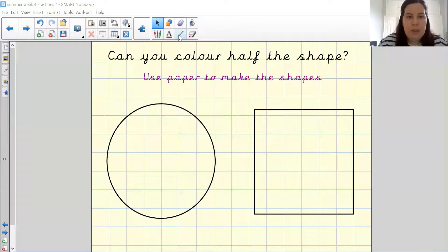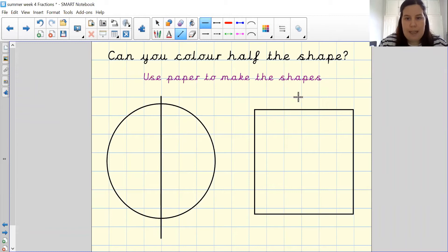Going back to our activity, all you have done is you have drawn a line down the middle to represent half - one, two - and that looks the same as our piece of paper, as you can see.